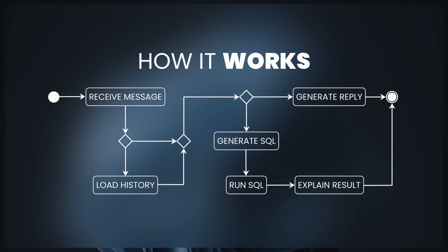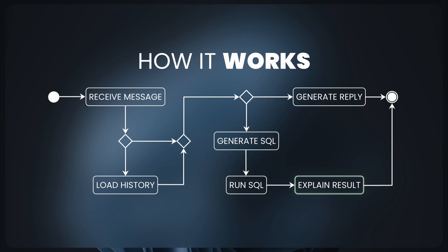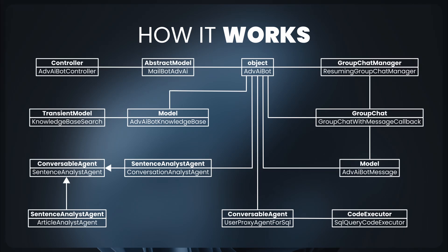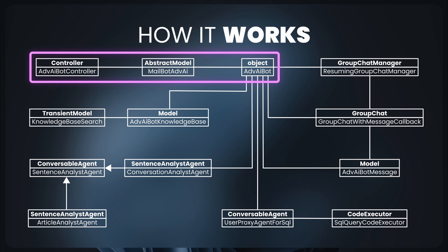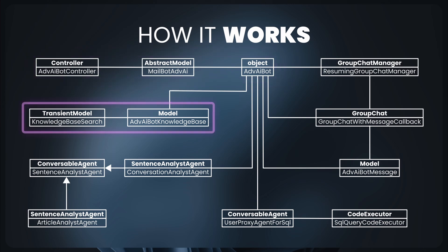Let's begin. Similar to our previous experiment, this time we also use the Discuss app as our base, so the process flow is also similar. Upon receiving messages, we load conversation history if available and pass it to AI to determine the topic of the conversation. If the topic is not in the topic list we defined, then AI will reply directly; otherwise AI will generate SQL queries, run them, and give a reply based on the query result.